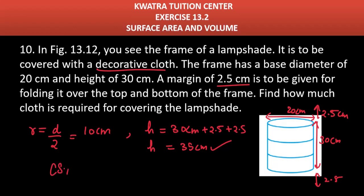We have to start from CSA which means 2πrh. So it will be 2, π will be 22 by 7, r will be 10, h will be 35. You can cancel to get 5 here and multiply all the numbers. 2 into 22 is 44, and 44 into 50 will give you 2200 cm square.